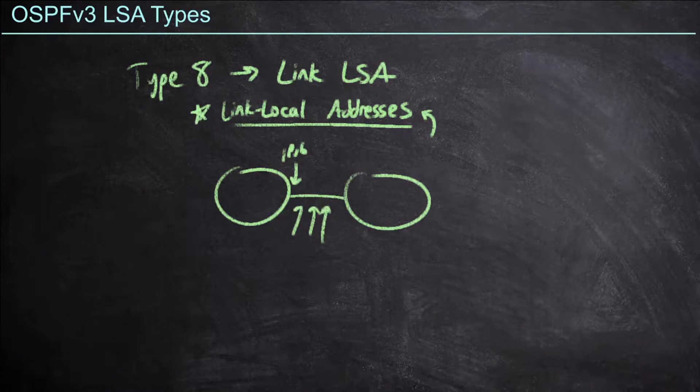Now every router is going to send a link LSA, and this link LSA is going to contain prefix information, but only for link local addresses. And link LSAs are not flooded to the area, they stay local to that link.